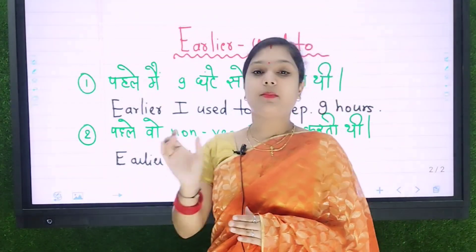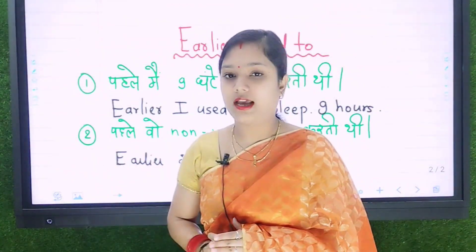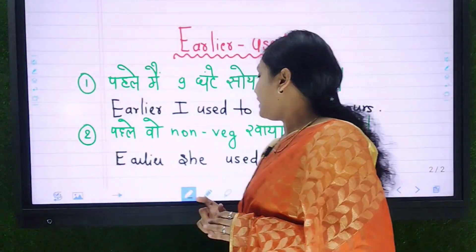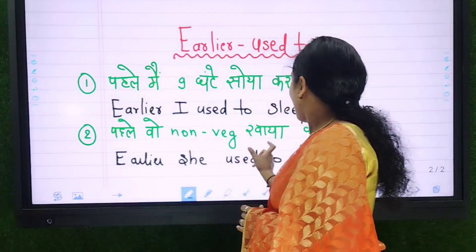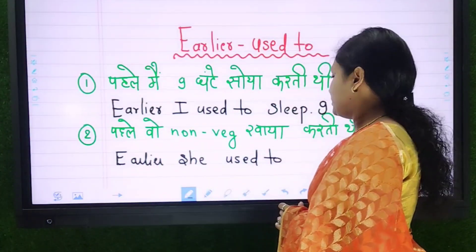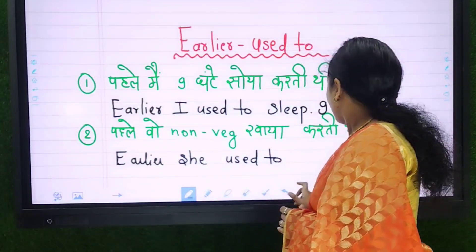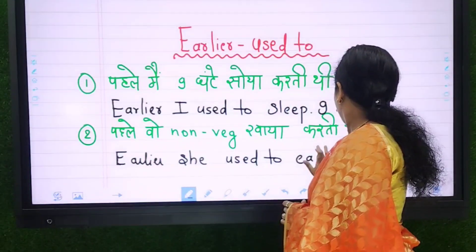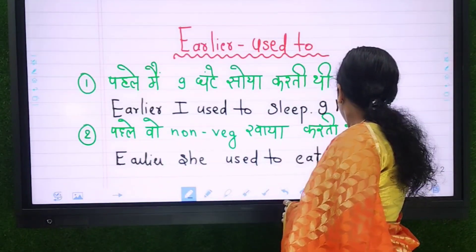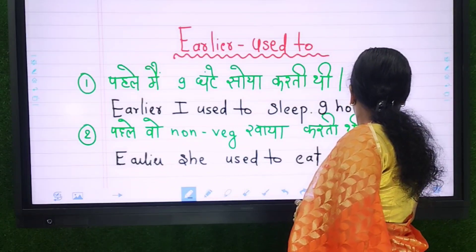तू के बाद आपको V1 ही use करना है। Next — पहले वो नॉन-वेज खाया करती थी — Earlier, she used to eat non-veg.